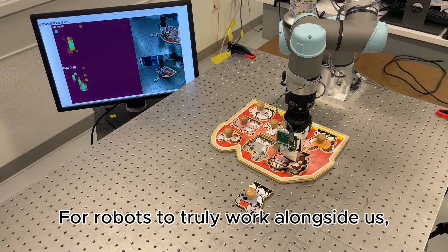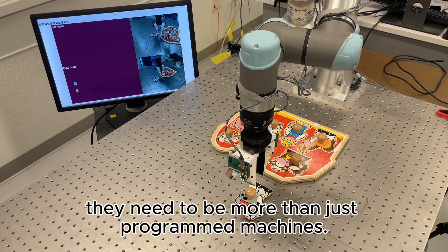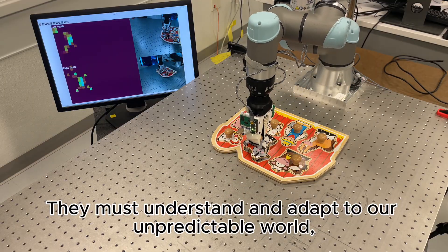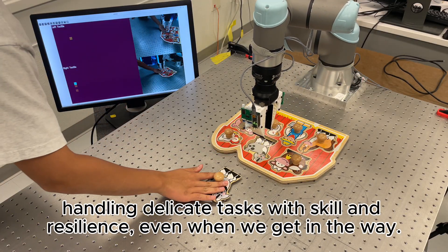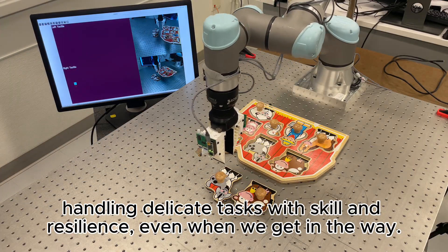For robots to truly work alongside us, they need to be more than just programmed machines. They must understand and adapt to our unpredictable world, handling delicate tasks with skill and resilience, even when we get in the way.